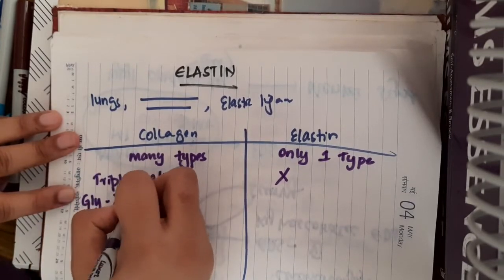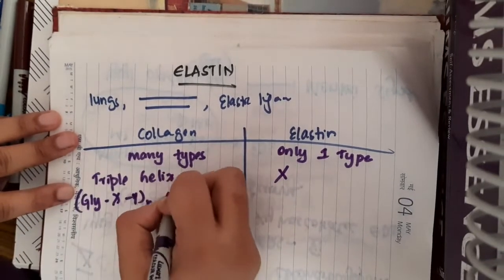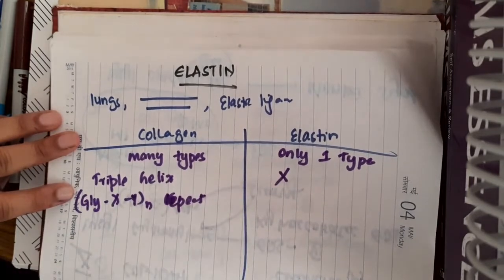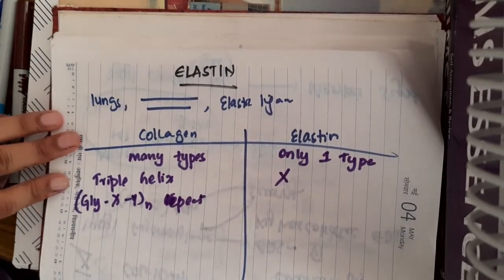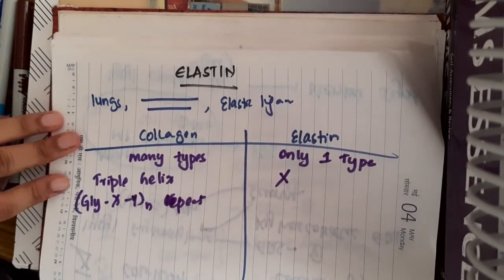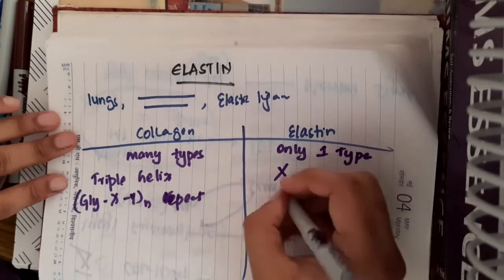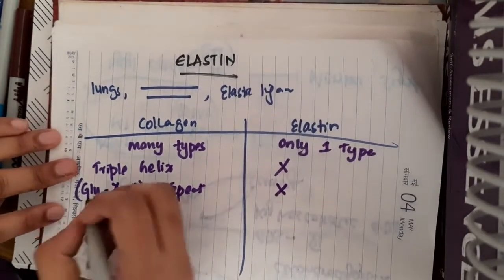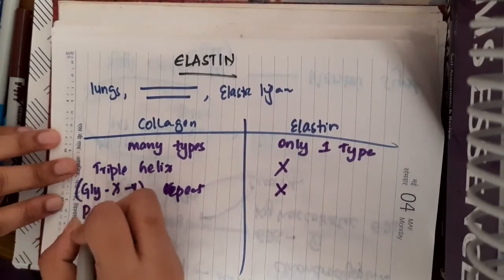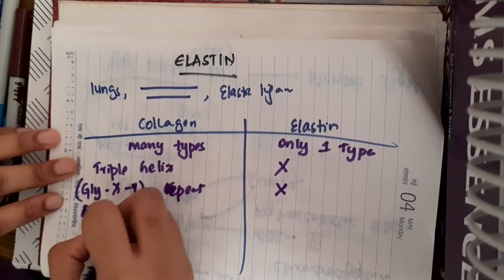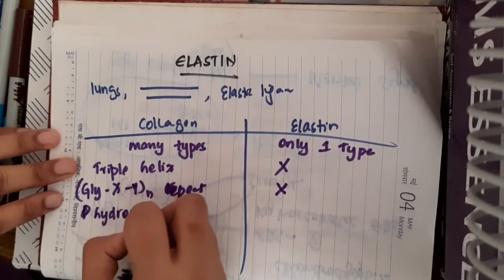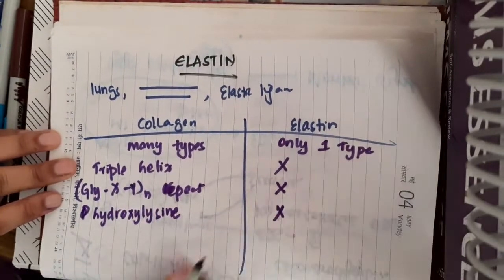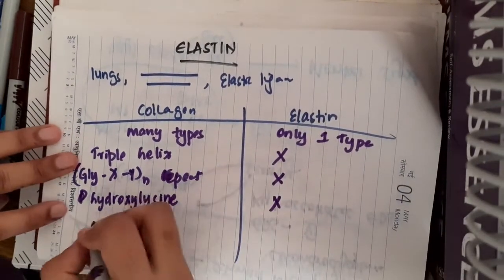In collagen, every third unit is a glycine residue, so you have glycine residue repeating units present in collagen. Such repeating units are not present in elastin. In collagen, you see the presence of hydroxylysine. This hydroxylysine is not present in elastin.